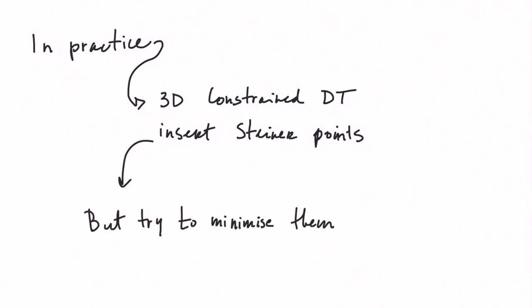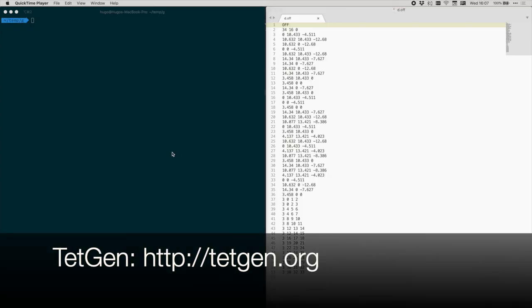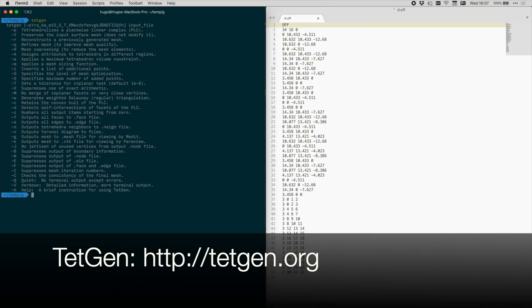The details of the algorithms are beyond the scope of this lesson, but that doesn't prevent you from using some of the implementation of these algorithms. The best one, and the most used in my opinion, is called TetGen. It takes a PLC as an input and outputs a constrained Delaunay tetrahedralization and tells you how many vertices were added.